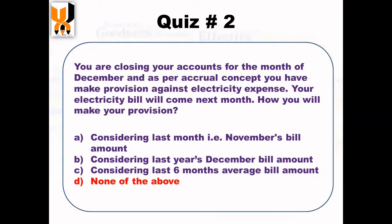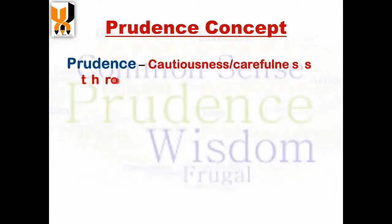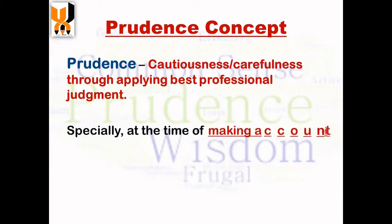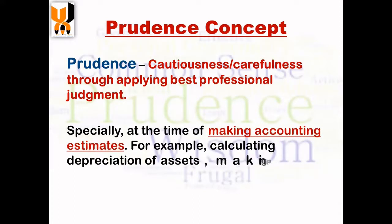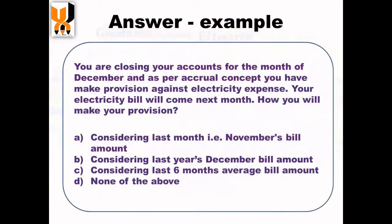None of them — if you take any of those three options, prudence will not be applied. Prudence means cautiousness and carefulness through applying best professional judgment, especially when making accounting estimates. For example, at the time of calculating depreciation of an asset or making a provision against expenses or making allowances against doubtful debts — when we make estimates, it is very important to apply prudence.